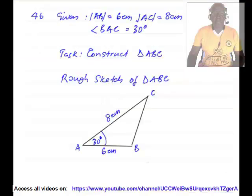We are to draw a triangle ABC. We have been given the length of AB to be equal to 6 centimeters, the length of AC to be equal to 8 centimeters, and angle BAC to be equal to 30 degrees.